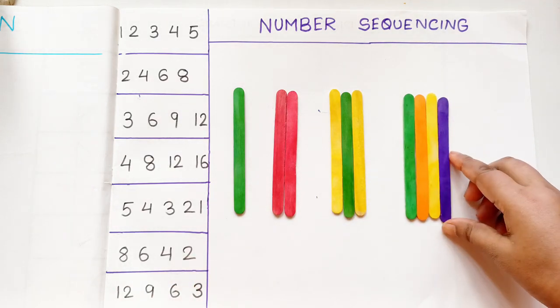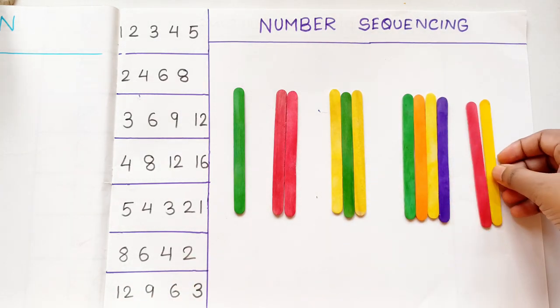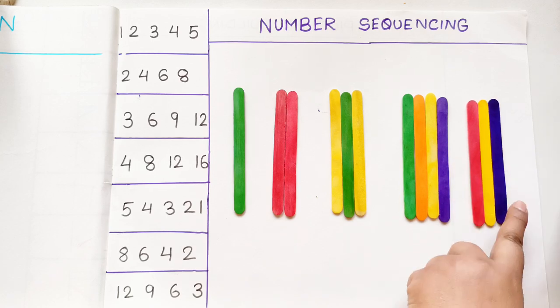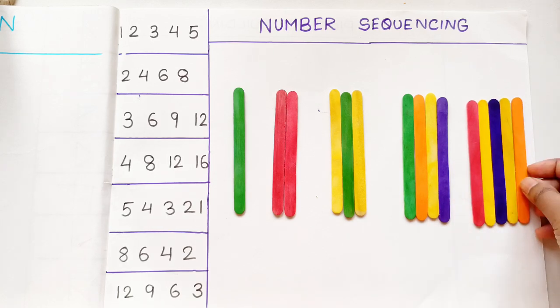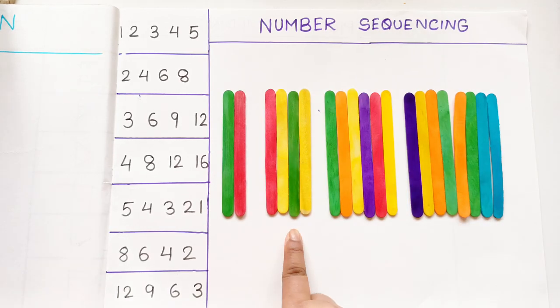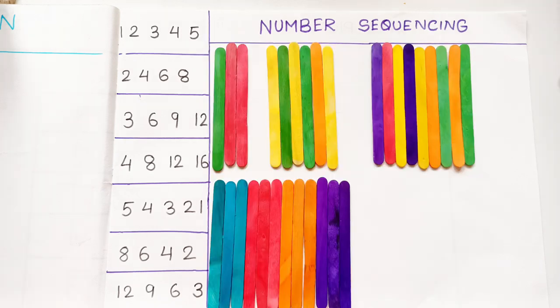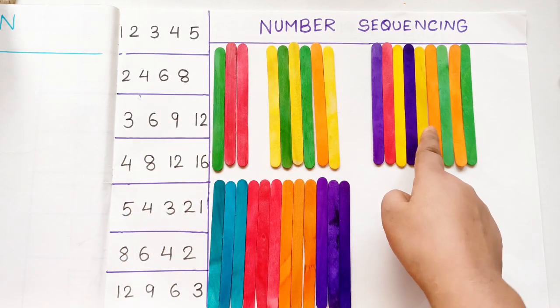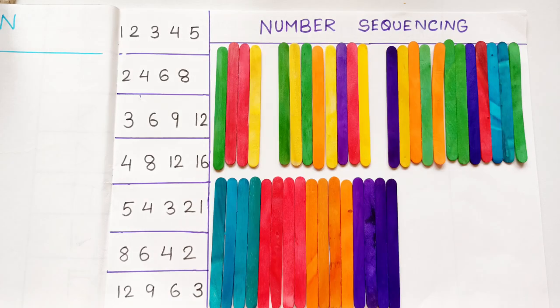So this is the sequence of one, two, three, four, five. Next is two, four, six, eight. Next one is three, six, nine, twelve. Now the next one is four, eight, twelve, and sixteen.